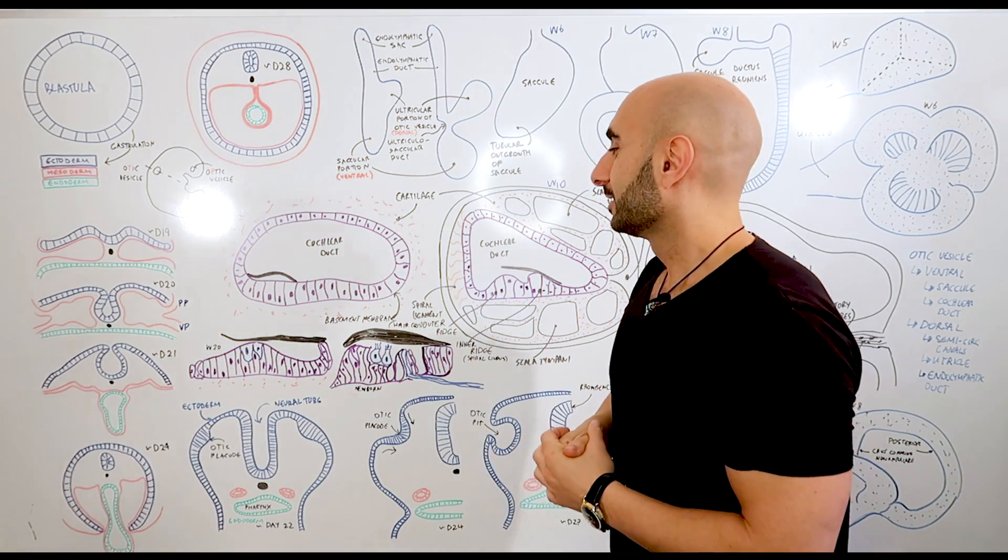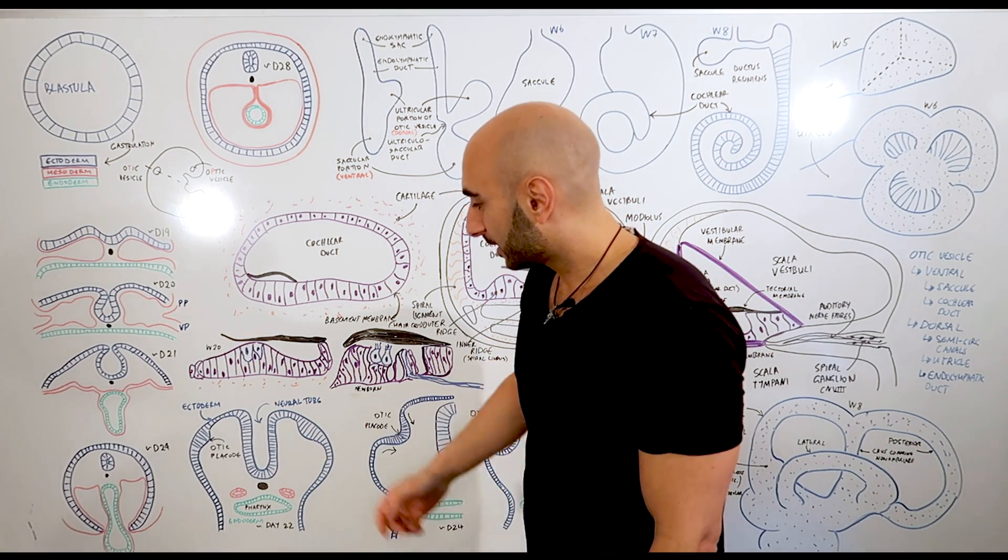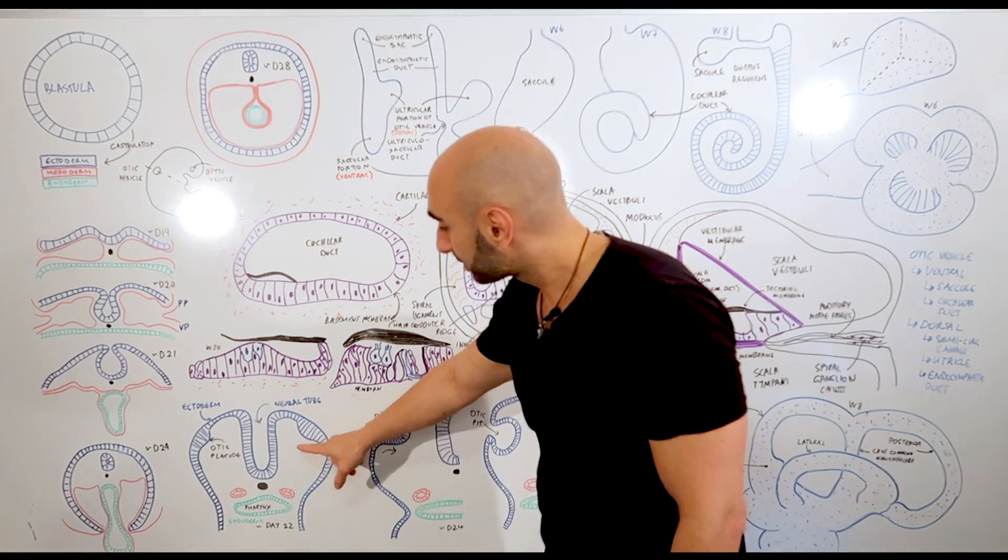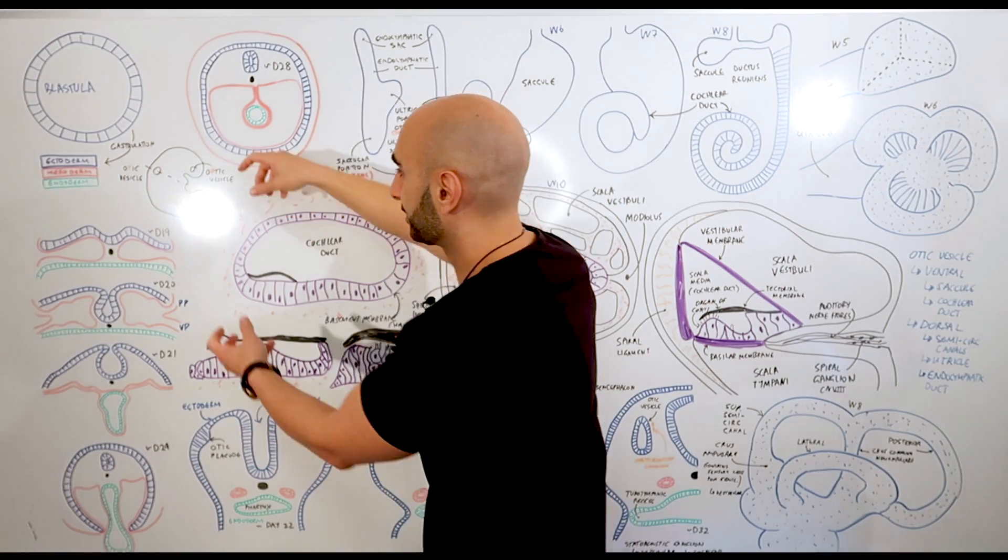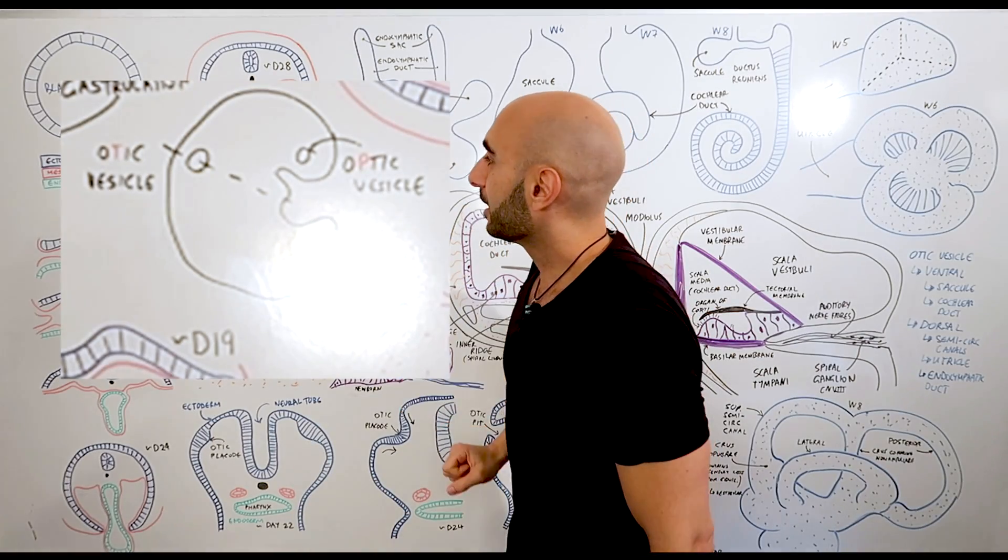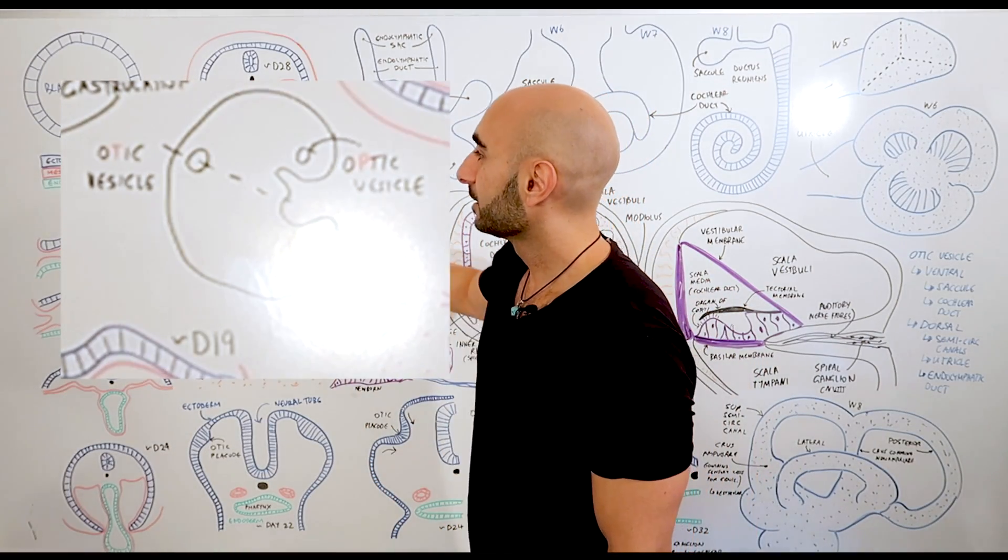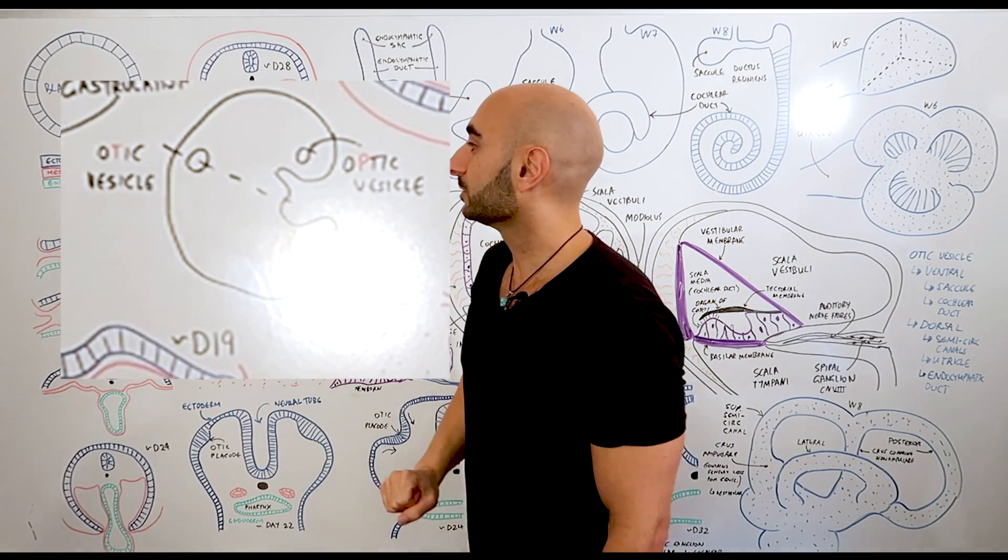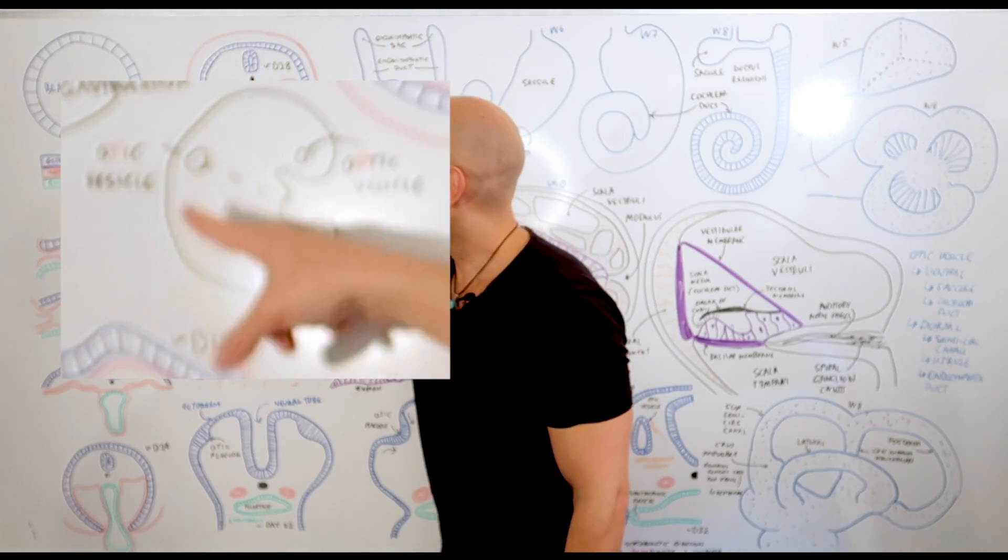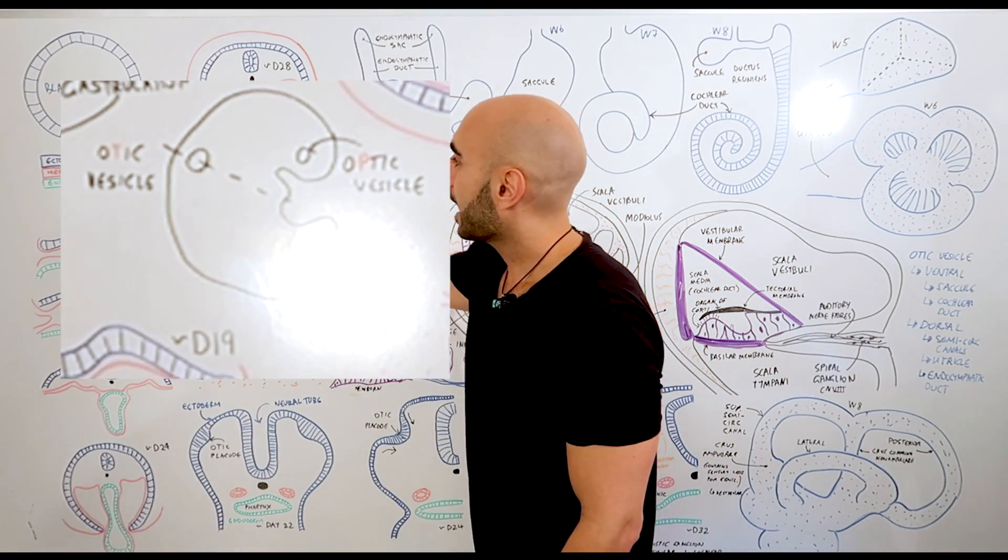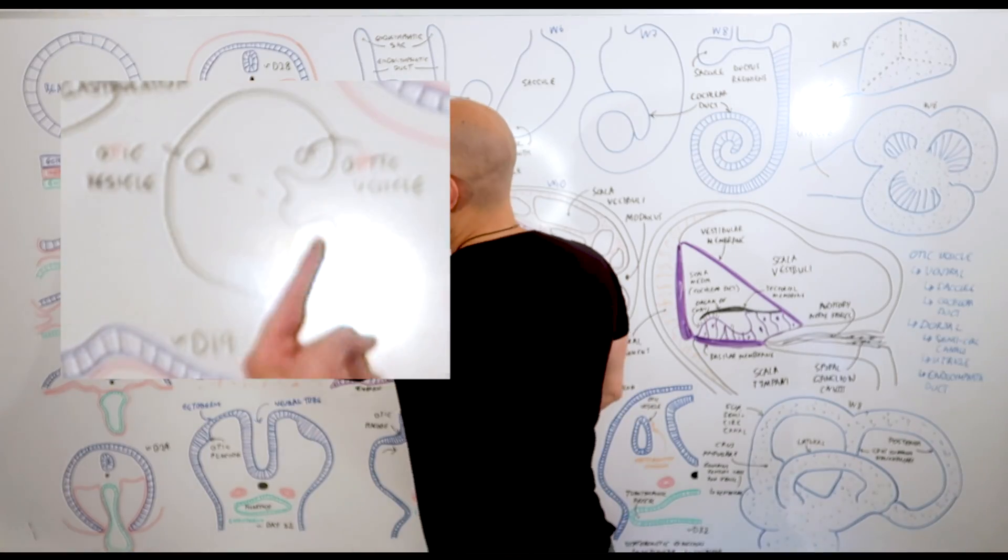Okay, so let's first look back over here. When I pointed to it earlier it probably looked like an alien, but this is just a cross-section of this. If we only focus on this, and this is pretty small so let's just bring it out there. We have the optic vesicle here from a previous video where we spoke about the embryology of the eye. Don't confuse that with the otic vesicle. The otic vesicle is essentially where the ear is coming from.